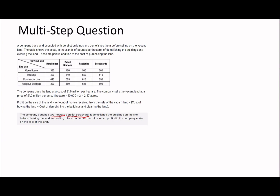So the company bought a two-hectare derelict scrapyard, demolished the buildings, cleared the land, and is selling it for commercial use. How much profit did the company make? Just above, it says profit is the amount of money received from the sale of the land minus the cost of buying the land and the cost of demolishing. So technically we know what we have to do — it's just three things to work out.